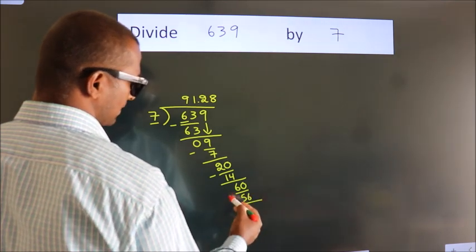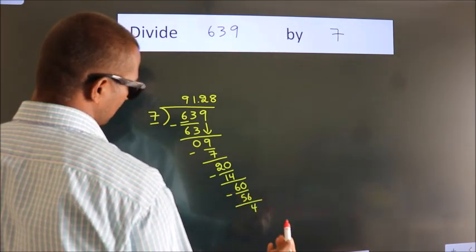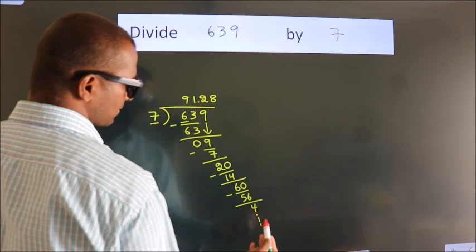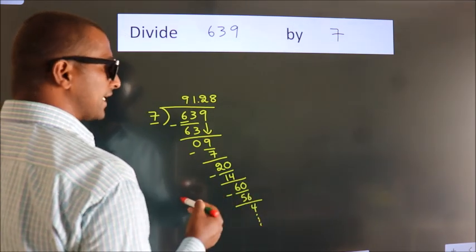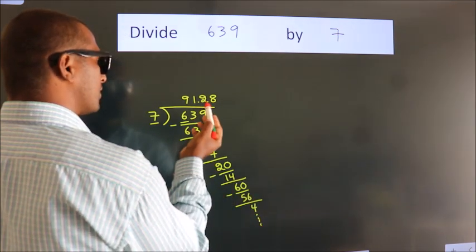Now we subtract. We get 4. And the division continues. It is enough if we do up to 2 decimal places.